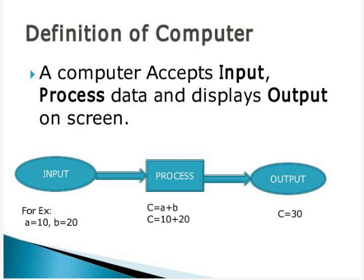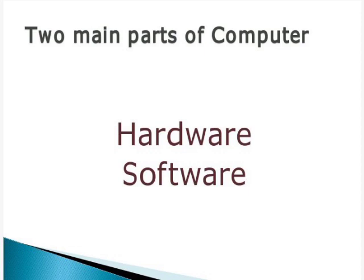Now you are clear with the definition of computer. Next, we move on to the two main parts of the computer. What are the two main parts? The first one is hardware and the second one is software.